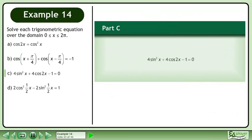In part c, solve 4sin²x plus 4cos2x minus 1 equals 0.